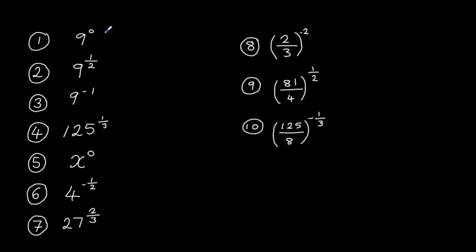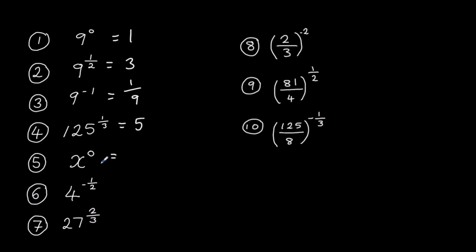First one: nine to the power of zero — anything to the power of zero is one. Nine to the power of a half — half means square root, square root of nine is three. Nine to the power of minus one — flip over, that makes one ninth. One hundred and twenty-five to the power of a third — cube root, the cube root of one hundred and twenty-five is five. Anything to the power of zero again is one. Two rules combined: four square rooted, power of a half gives two, then flipped over — one over two.